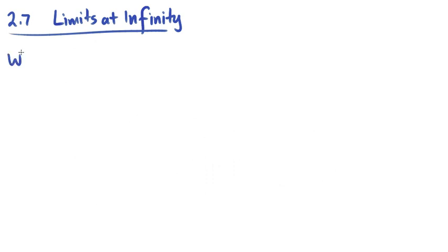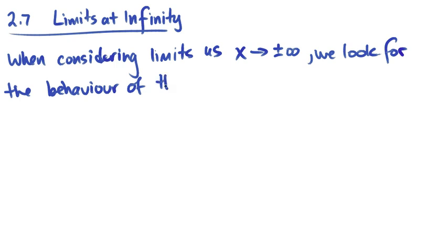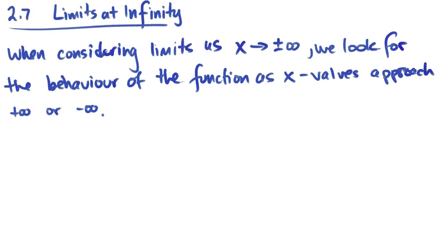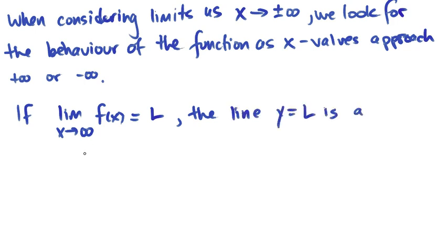Section 2.7: limits at infinity. When considering limits as x approaches either positive or negative infinity, we look for the behavior of the function as x values approach positive or negative infinity. If the limit as x approaches positive infinity for your function has a value l, the line y equals l is a horizontal asymptote.